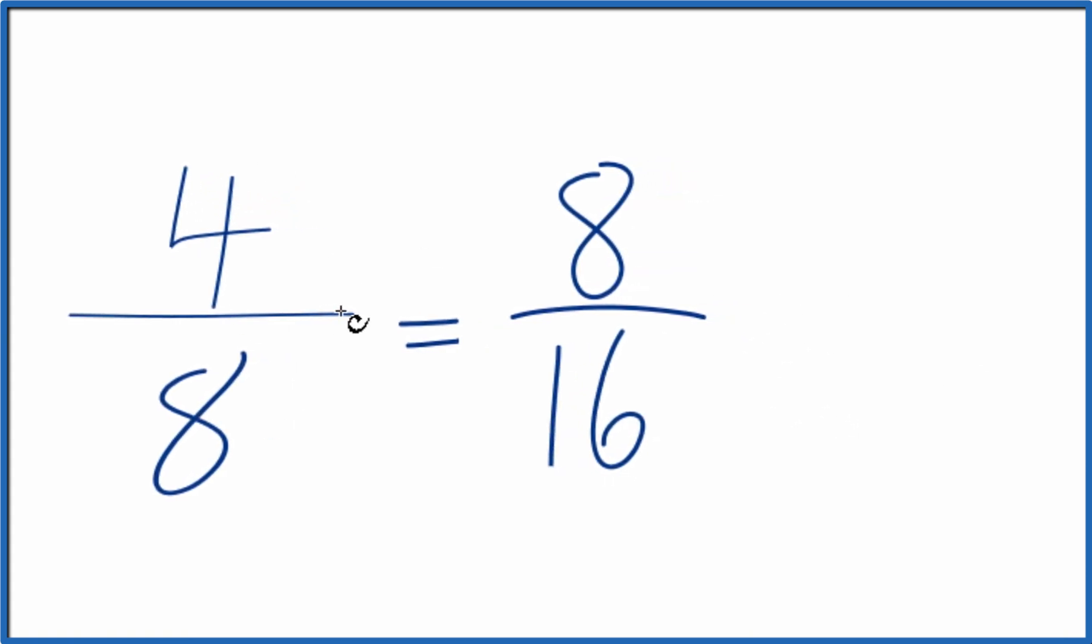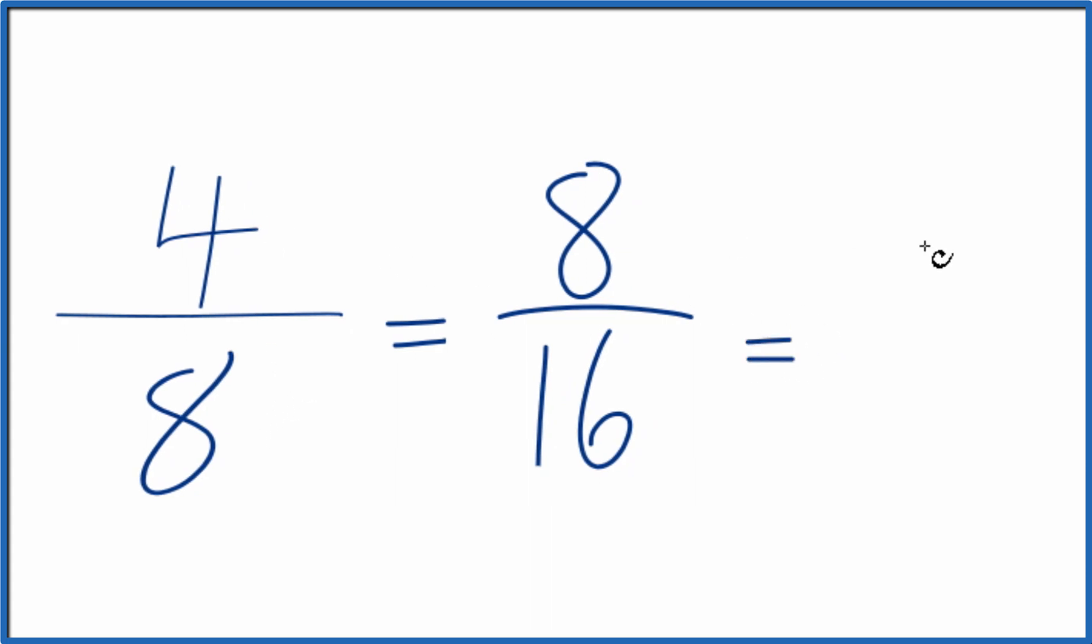We could also multiply four by three and eight by three. Four by three, that's 12. Eight by three is 24, another equivalent ratio.